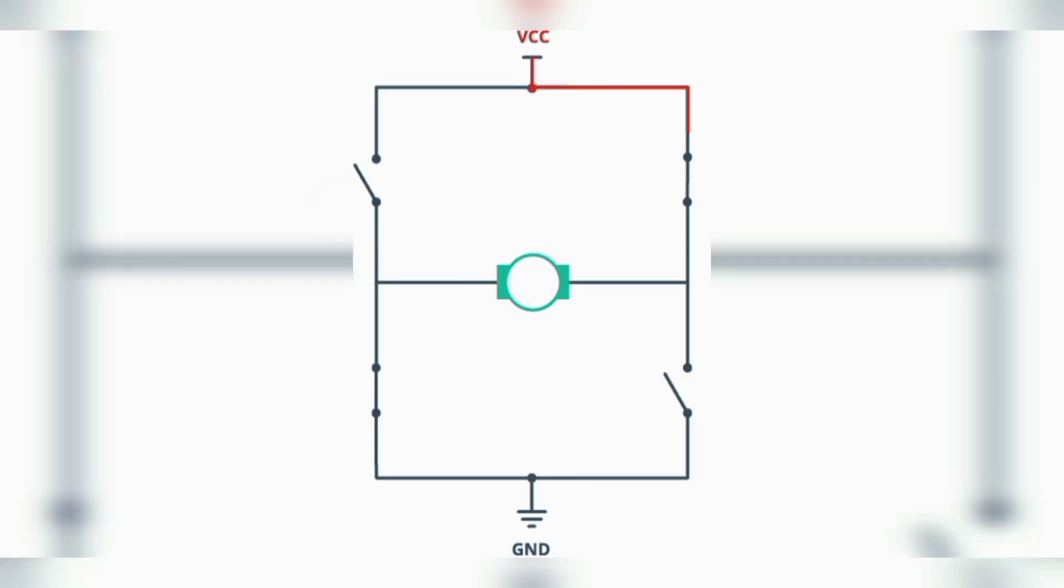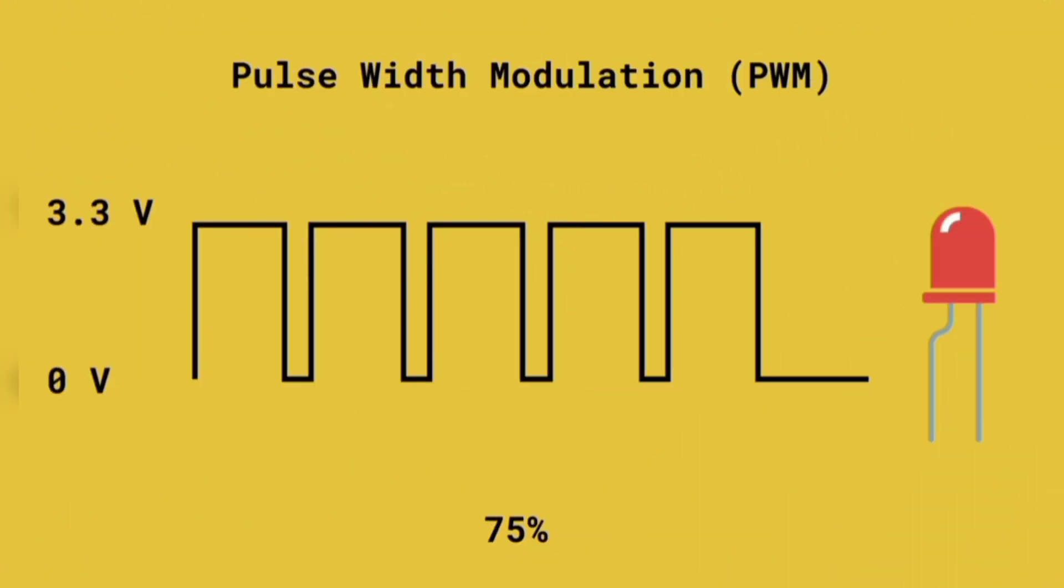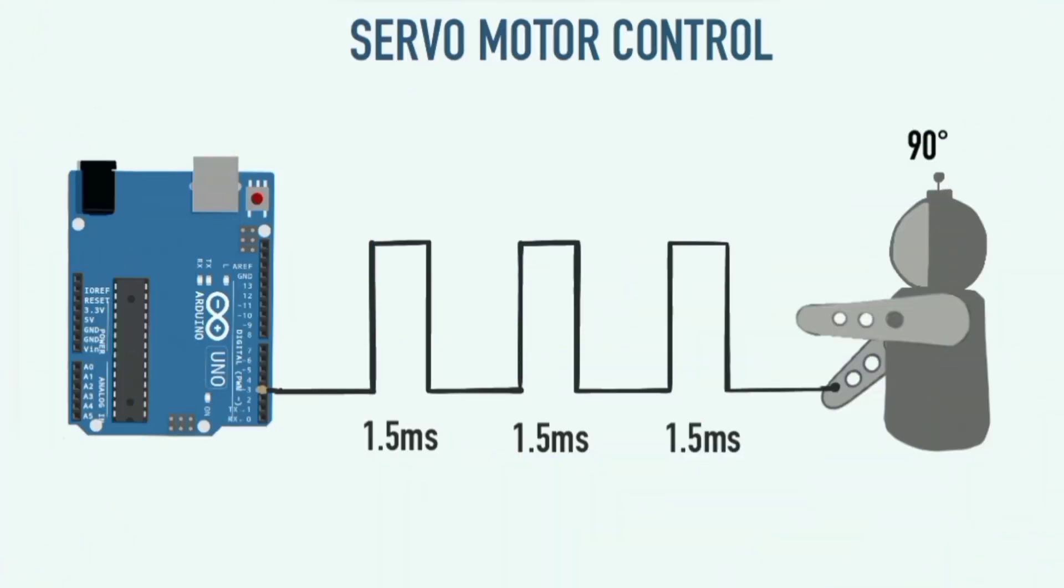Next basic electronic circuit is the PWM—the pulse width modulation—which is a digital trick to simulate analog behavior. Want to dim an LED or control motor speed or fan speed? PWM is the go-to method. PWM allows control over power.